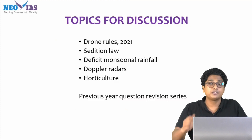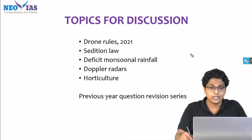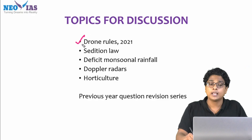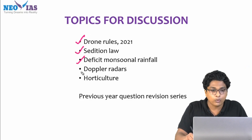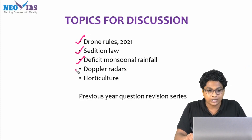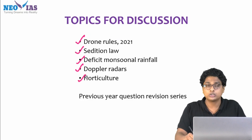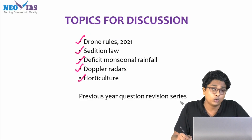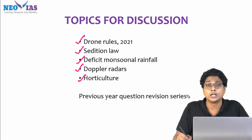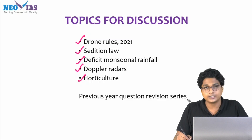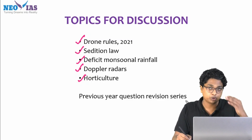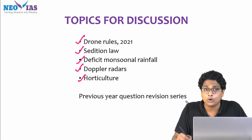These are the topics which we are going to cover today: the first one is Drone Rules 2021, then the Sedition Law, Deficit of Monsoon Rainfall, then Doppler Radars and Horticulture. Also, we will go through the previous question revision series. We will discuss the last video's question — the answer we will discuss today.